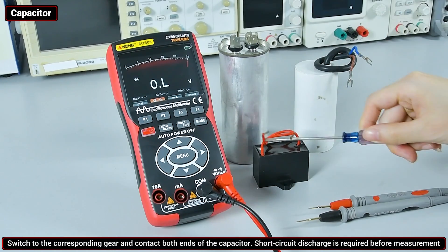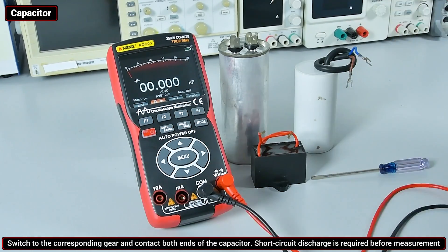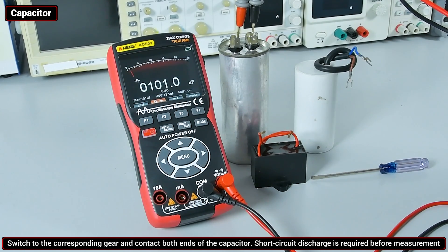Capacitance: short circuit discharge is required before measurement. Switch to the corresponding gear. The pen can contact both ends of the capacitor.